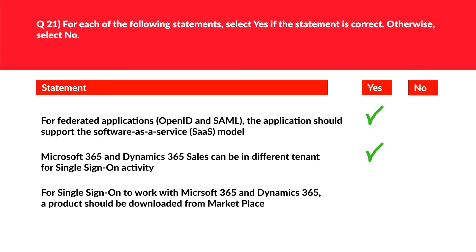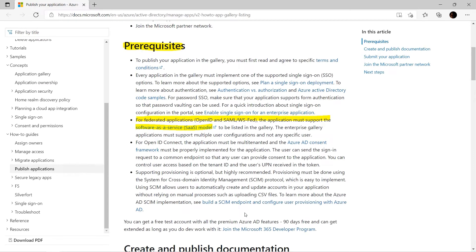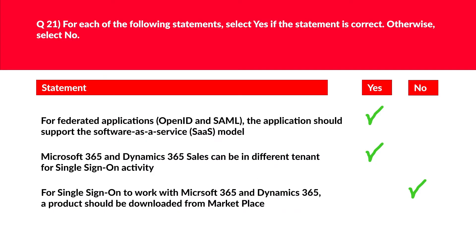Let's look at statement 3: for SSO to work with Microsoft 365 and Dynamics 365, a product should be downloaded from the marketplace. There is no relation between SSO and downloading a product. Hence, this option is incorrect. Looking at the official documentation, the prerequisite for a federated application is that the application must support the SaaS model. We got our answers and we'll log this.